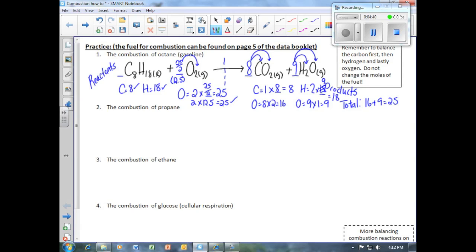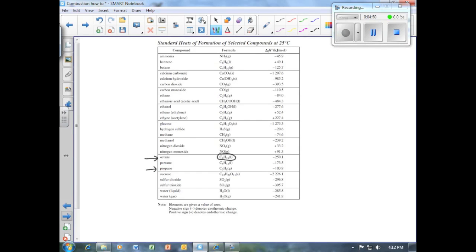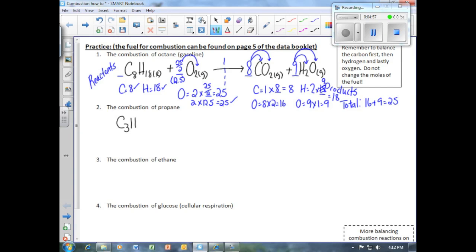We will now balance the second combustion question on page eight of the workbook. In order to write the combustion of propane, we go to page five and find propane. Propane is C3H8 gas. Same as before, the other reactant in a combustion reaction is always oxygen. The products of hydrocarbon combustion are always carbon dioxide gas plus water vapor.